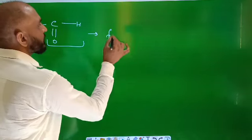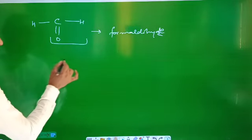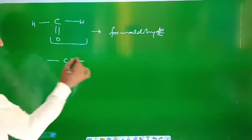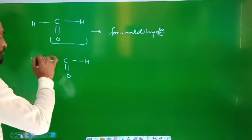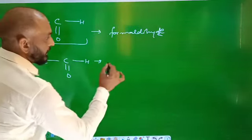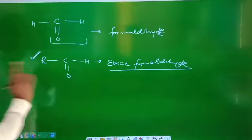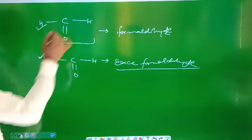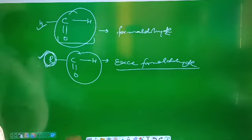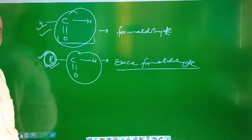If it is a carbonyl group where one valence is completed with a hydrogen atom and another valence is completed with an alkyl group, then it is also an aldehyde — but except formaldehyde. Both have a CHO functional group, so both are aldehydes. But one is formaldehyde and the other is a different aldehyde.